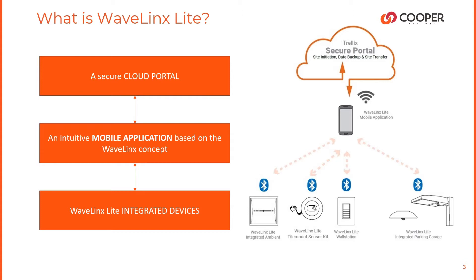And finally, Wavelinks Light uses the IEEE 802.15.1 Low Energy Protocol, otherwise known as Bluetooth, and we use that as the communications medium between the mobile app and the various devices in the Wavelinks Light system. So here you can see that those devices include integrated sensors, that could mean tile-mounted sensors, and that could also mean wall stations as well.